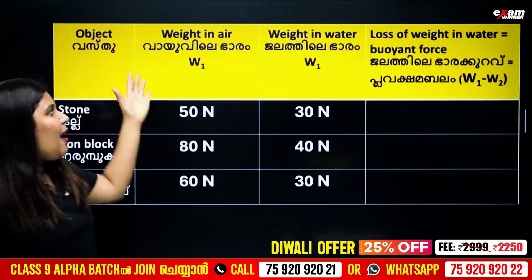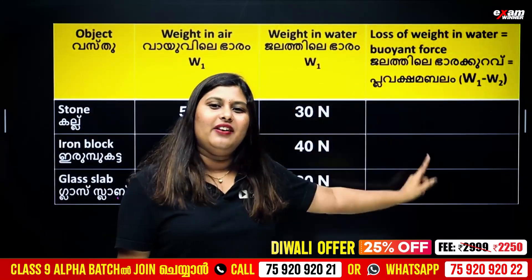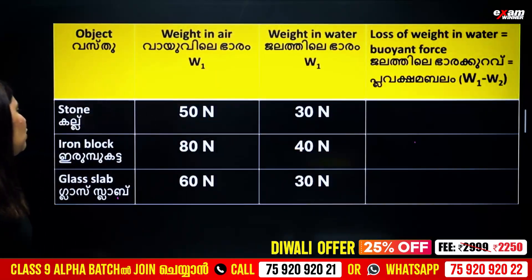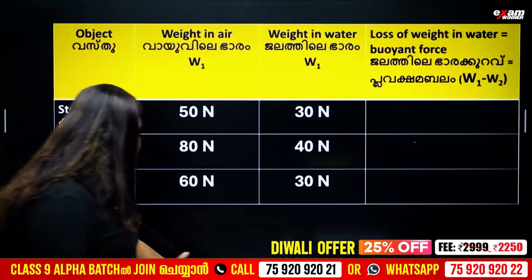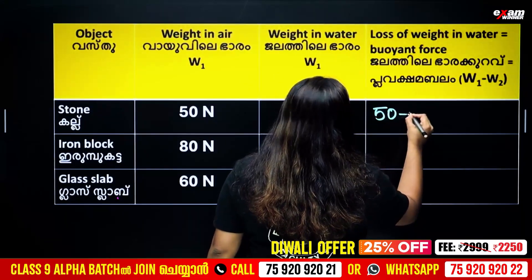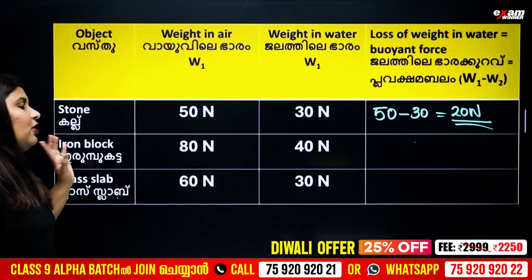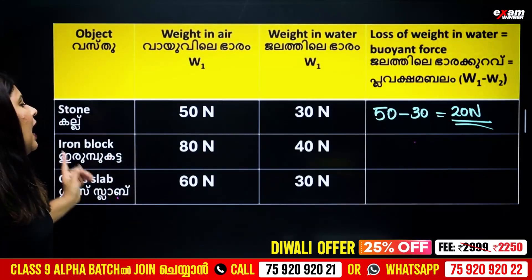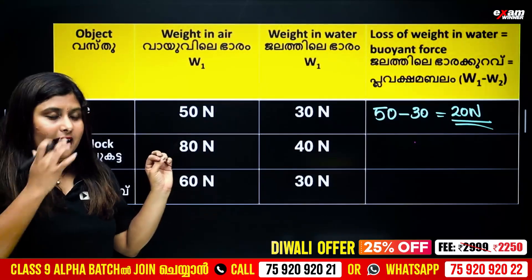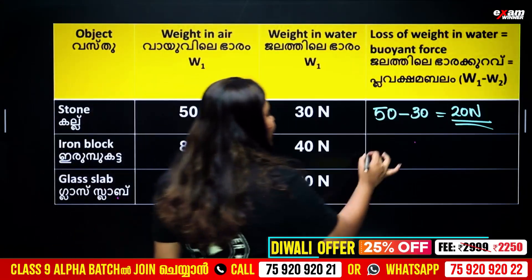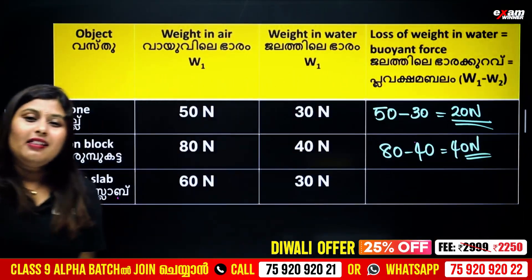In the first case, the object gives a certain weight. In the second case, it gives a little less weight, and in the third case, even less. In one case, you must give it 50 N; in another, the weight is 20 N — that is the point force reading. In the last case we picked 70 N, so the loss in water is 80 minus 40, giving 40 N.